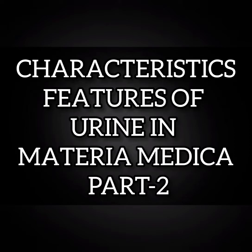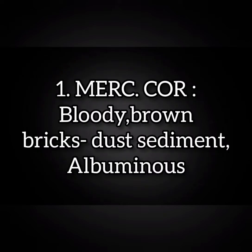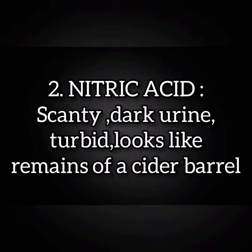Today we are going to see about characteristic features of urine in Materia Medica part 2. First one, Mercurius: they have bloody brown brick dust sediment in urine and albuminous urine. Nitric acid: they have scanty dark urine, turbid, looks like the remains of a cider barrel.